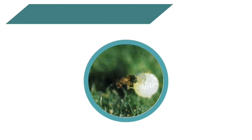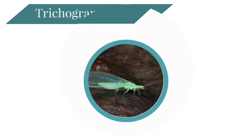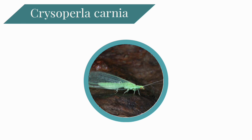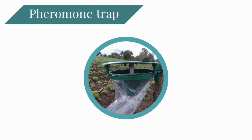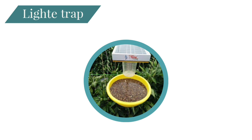Additional biological practices include inundative release of egg parasites such as Trichogramma species from 45 days after sowing, and also inundative release of predators such as Chrysoperla carnea. Use of methyl eugenol pheromone traps to attract male moths at the rate of 7 traps per acre. Also use light traps in the evening to attract adult moths.